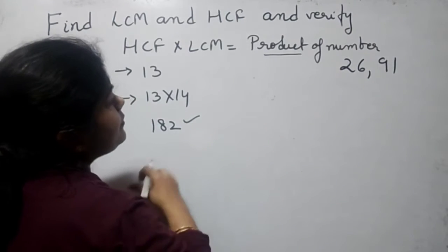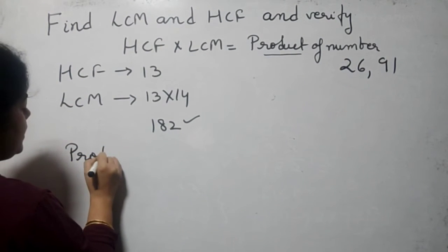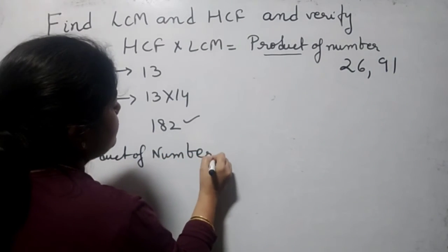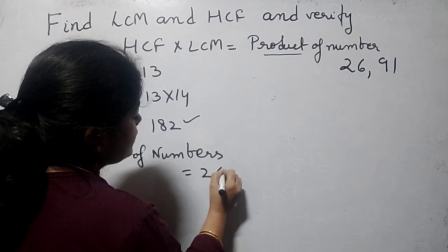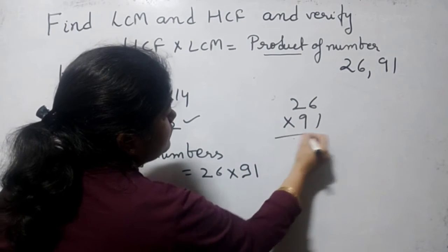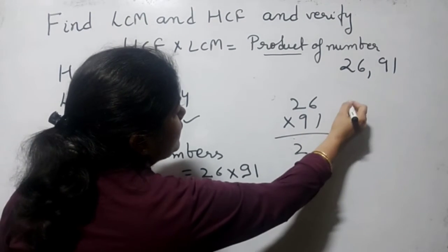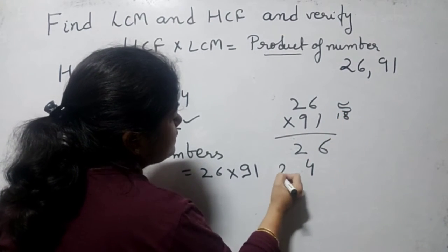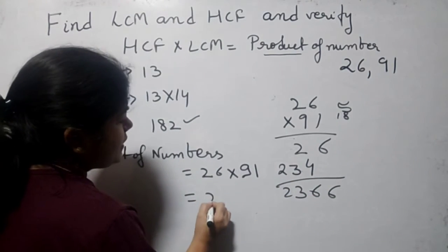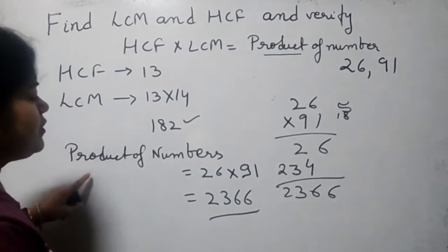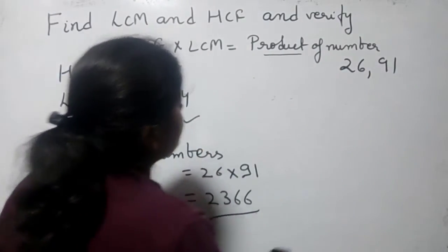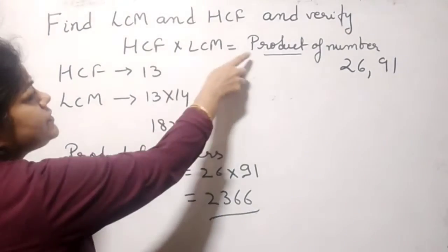Now we have to find the product of numbers, which is 26 into 91. Multiplying 26×91 gives us 2366. So the product of two numbers is 2366. Now we have the relationship: HCF into LCM is equal to product of numbers. We find the product of HCF into LCM: HCF is 13 and LCM is 182. So 13 into 182 equals 2366.